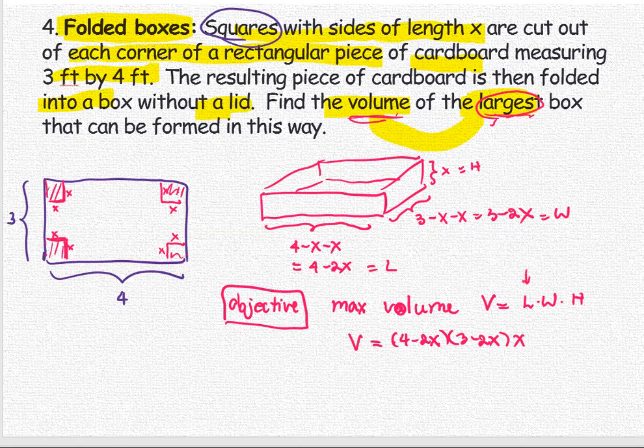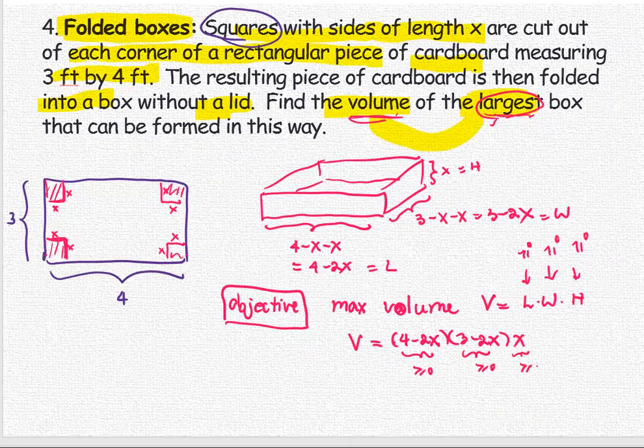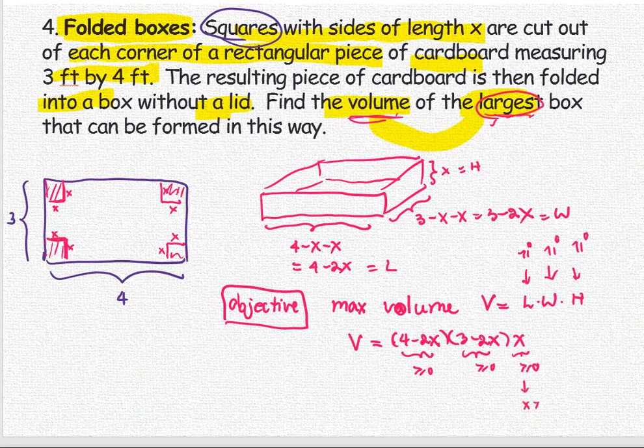Each measurement has to be greater than or equal to zero. x greater than or equal to zero. If 3 minus 2x is greater than or equal to zero, then x has to be less than or equal to 3 over 2. And from the first factor, x has to be less than or equal to 4 over 2, which is 2.